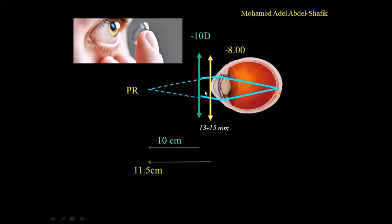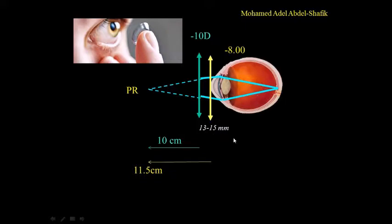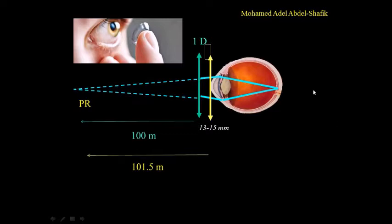That's why in high errors, you need to make in mind the effect of this distance. While in cases of small errors, it doesn't make much difference. In applying contact lenses, up to minus four diopters, we use the same power. But higher than minus four, then we depend on tables to see the effect of the distance. This is known as the back vertex power.